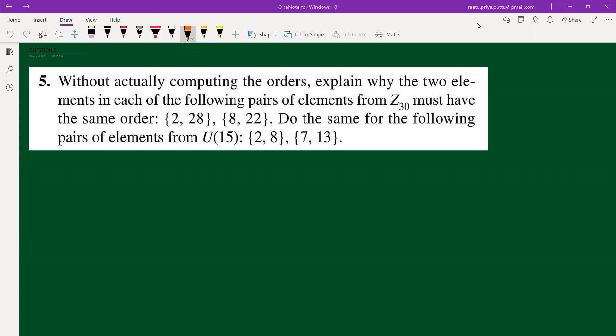What the question says: without actually computing the orders, we have to explain why the two elements in each of the following ordered pairs from Z30 must have same order. So for Z30, these two are considered, and for U15, these two are considered.